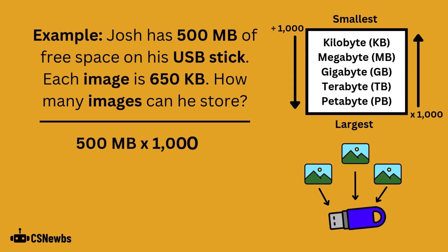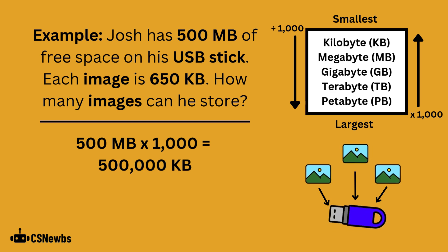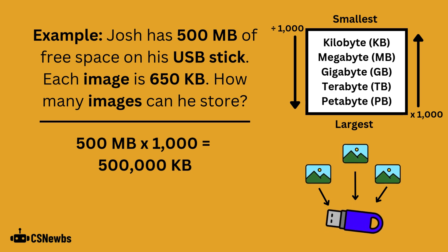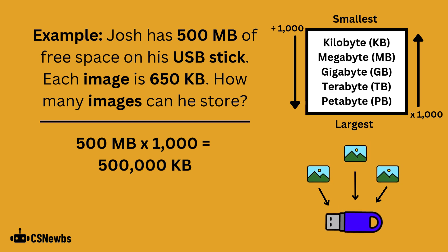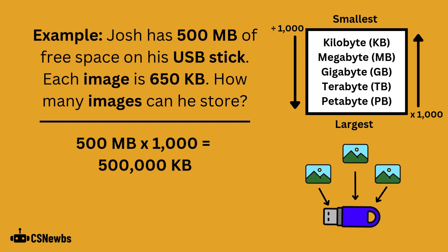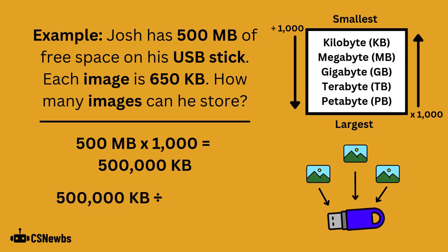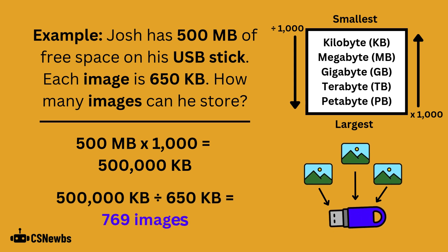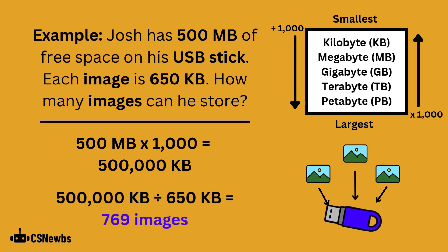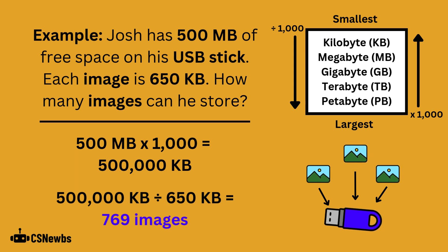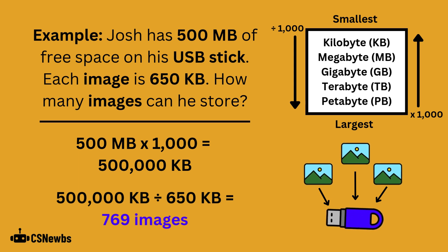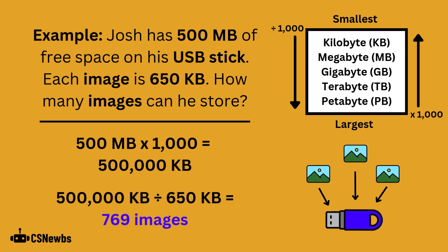We need to convert the 500MB into kilobytes so that we can accurately compare them. 500MB multiplied by 1000 gives us 500,000 kilobytes. 500,000 kilobytes divided by 650KB gives 769.2. We cannot have 0.2 of an image, so we round it down to 769.